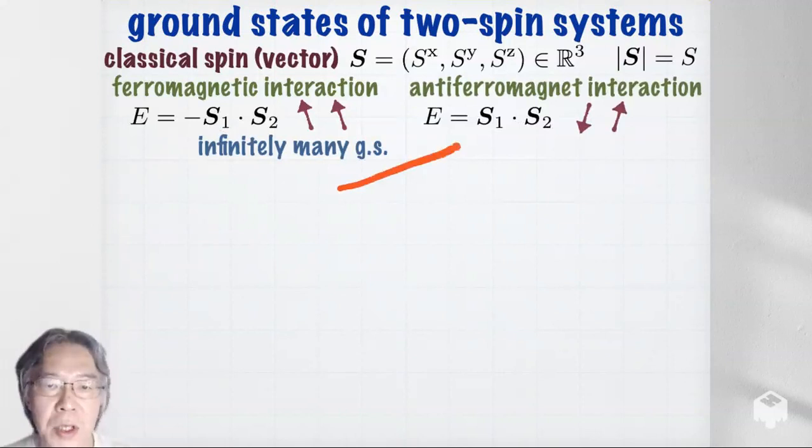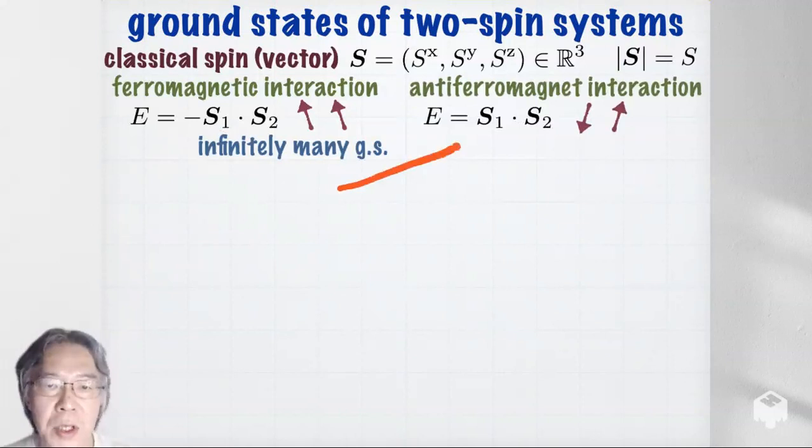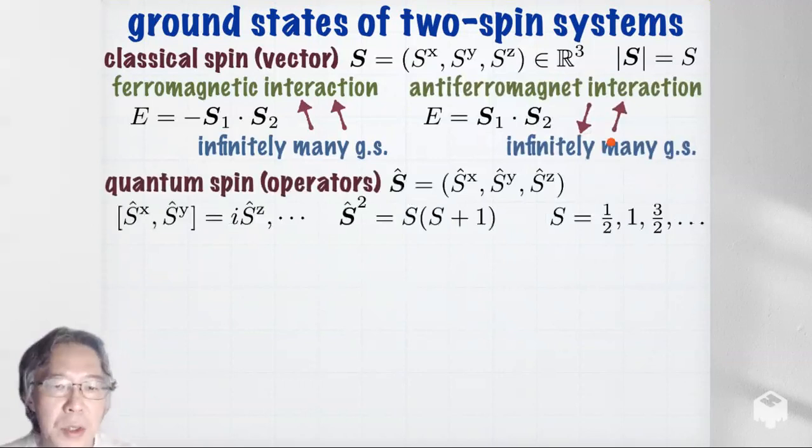The situation is more or less the same for anti-ferromagnetic interaction. Now you have S dot S without the minus sign, and to minimize the energy, you want two spins to point in opposite directions. Again, you have infinitely many ground states.